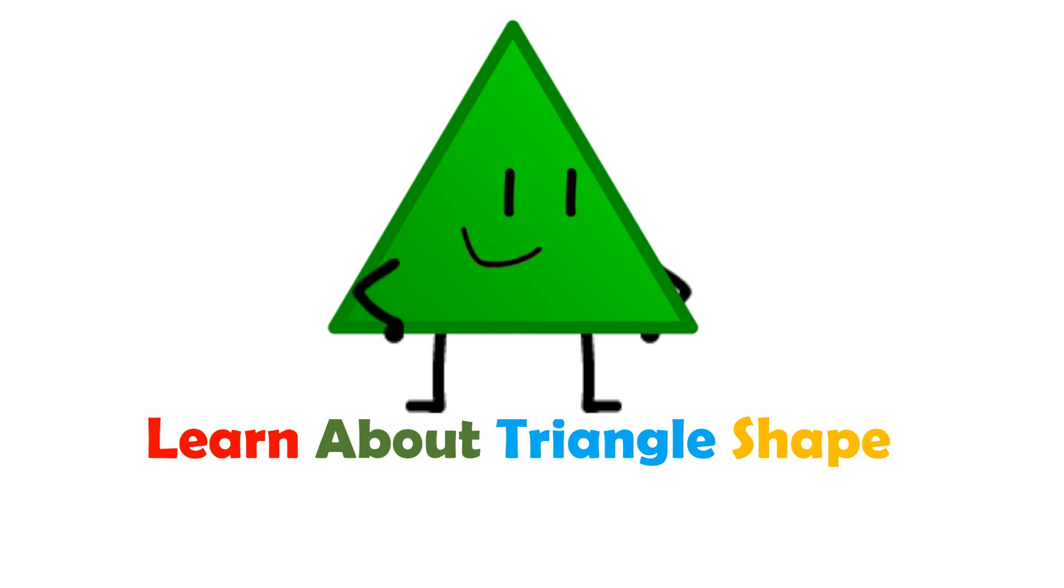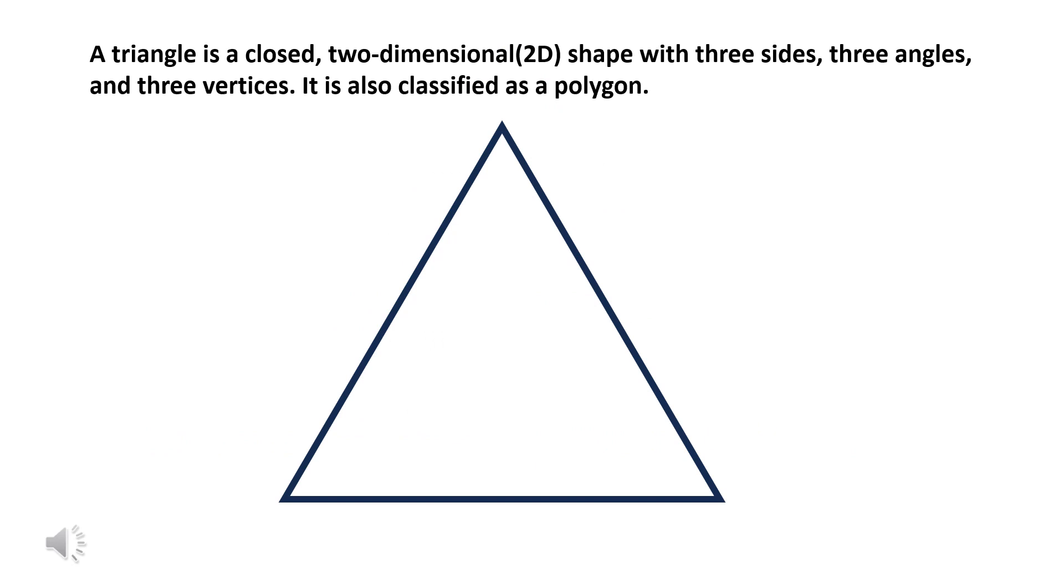Let's learn about triangle shape. A triangle is a closed, two-dimensional (2D) shape with three sides, three angles, and three vertices. It is also classified as a polygon.